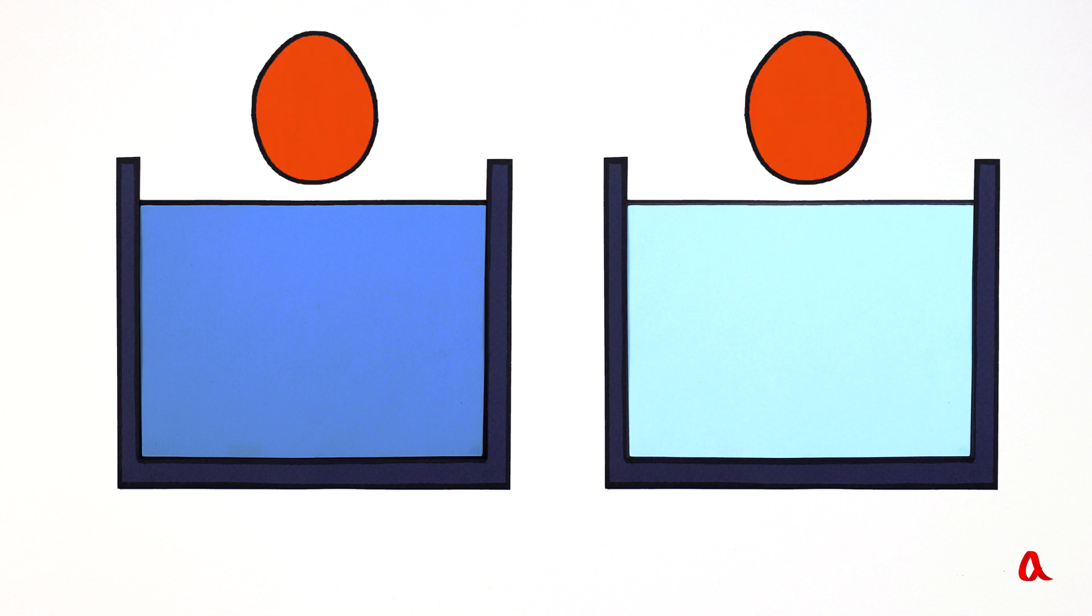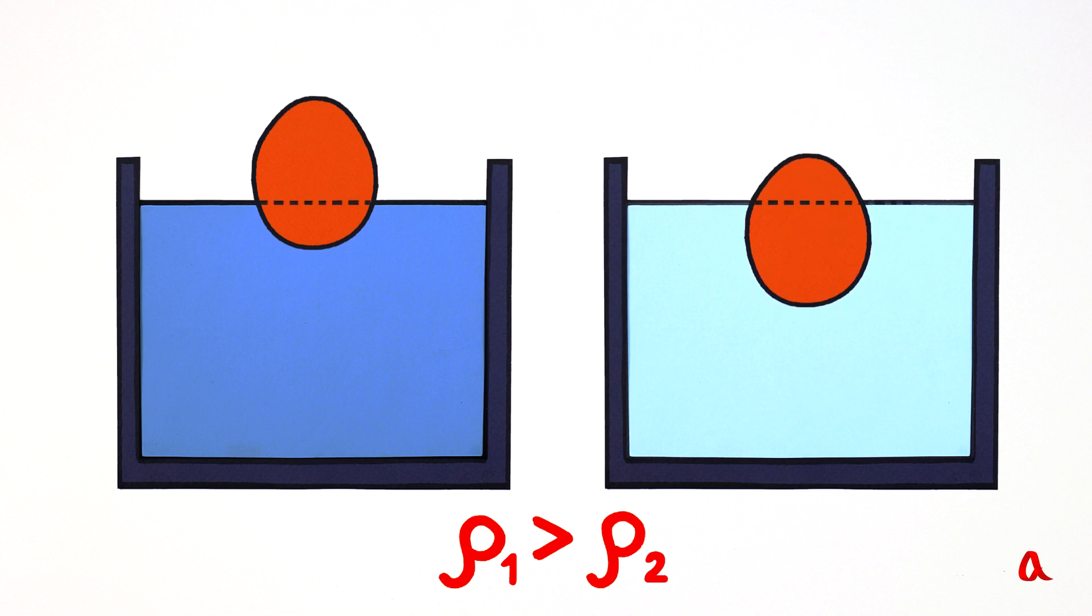Let us take two identical bodies and put them into liquid media, one of which is denser than the other. The volume of the submerged part will be smaller in the first case and greater in the second one, for the weight of the displaced liquid to equal the body weight in both cases.